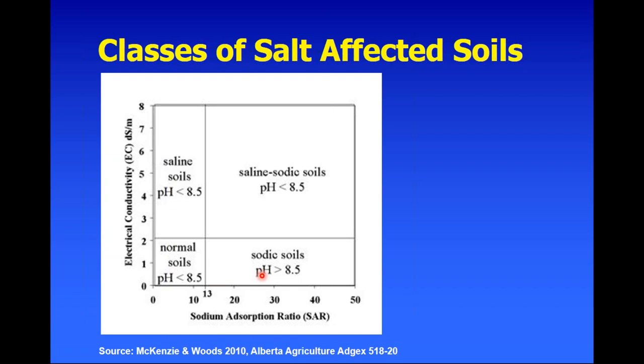Typically, a sodic soil is high in sodium and will often have a very high pH. Whenever I see a soil with a high pH, I'm often thinking that could potentially be a sodic soil. And if you happen to have a high EC and a high SAR, that soil will be classified as saline-sodic, which is going to cause a lot of problems.